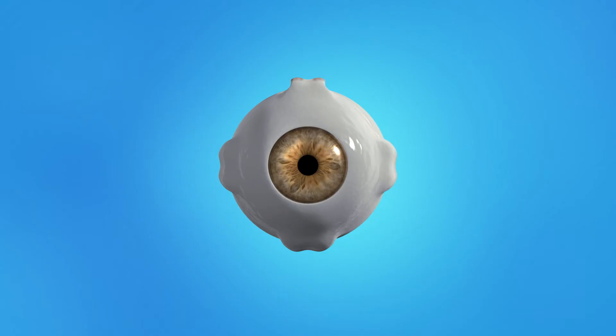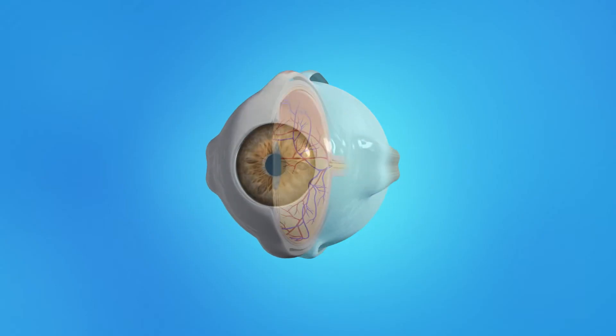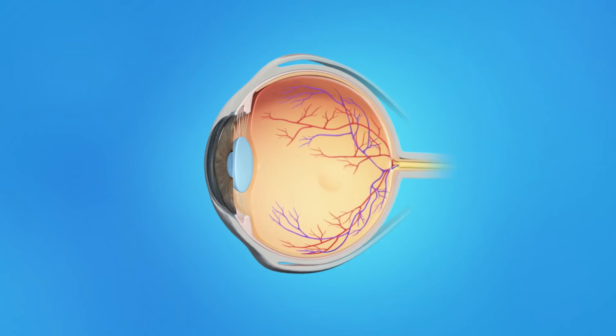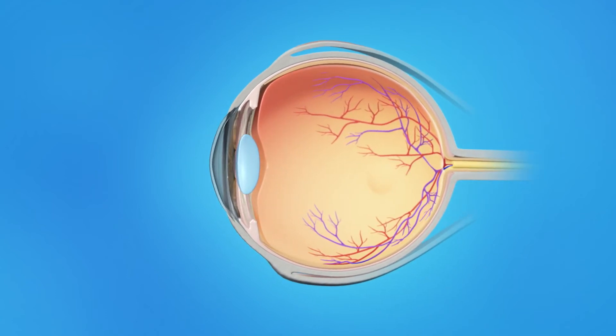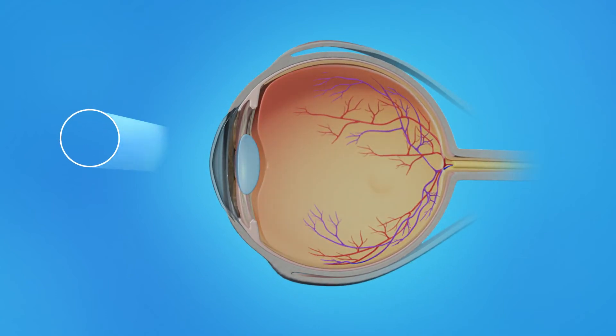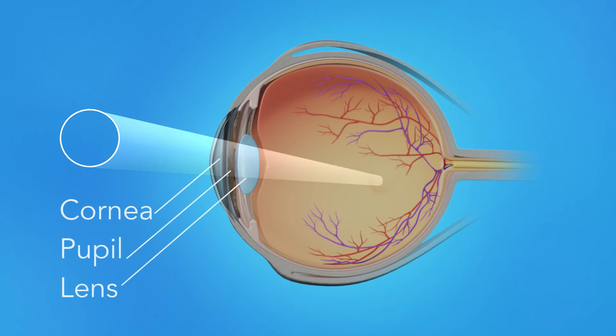To understand how a macular pucker affects your vision, let's take a look at how the eye works. Light rays enter the eye through the cornea, pupil, and lens.